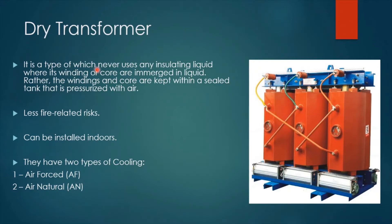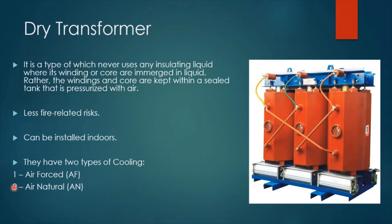A dry type transformer never uses any insulating liquid in which its winding or core are immersed. Rather, the windings and core are kept within a sealed tank that is pressurized with air. It has less fire-related risks and is safe to be installed inside buildings. Dry transformers have two types of cooling: air forced (AF), which is equipped with fans to cool down the transformer, and air natural (AN), which does not utilize any fans but relies on natural air.